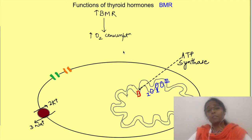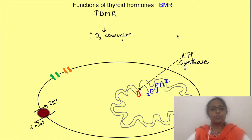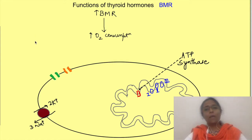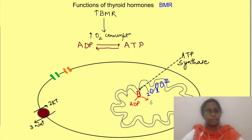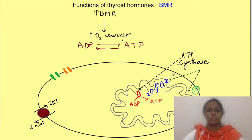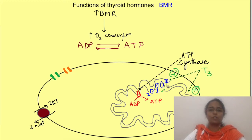The first function we will discuss is the effect on basal metabolic rate and thermogenic action. Thyroid hormones increase the production as well as utilization of ATP. They increase the oxidative phosphorylation of ADP to ATP in mitochondria by increasing the number of mitochondria and the production of cytochrome oxidases, which are enzymes involved in the respiratory chain.